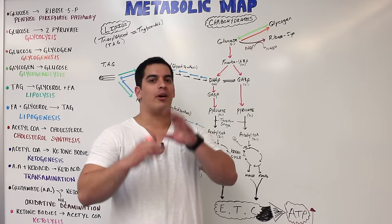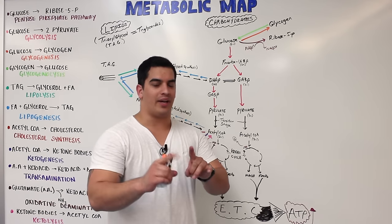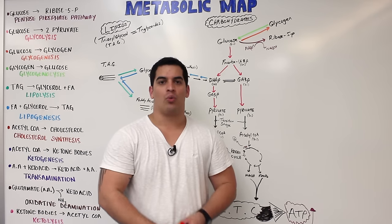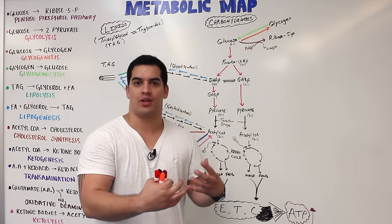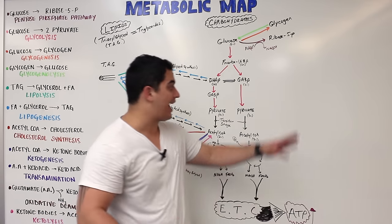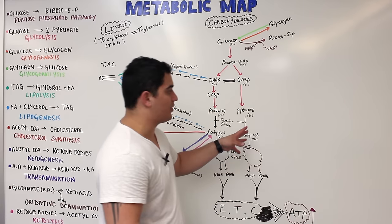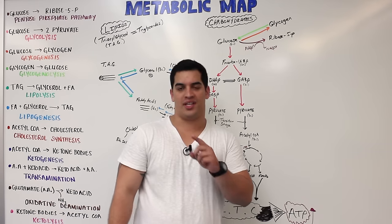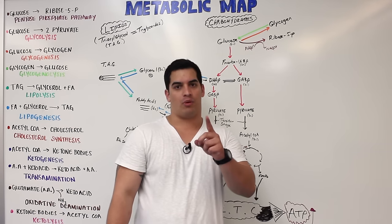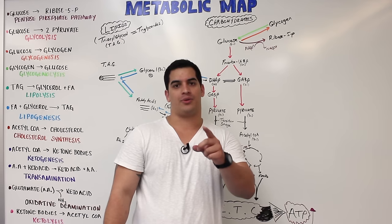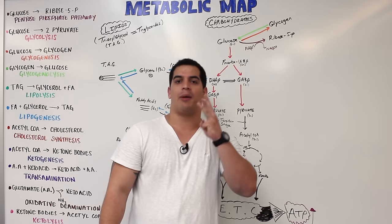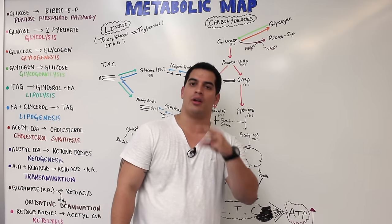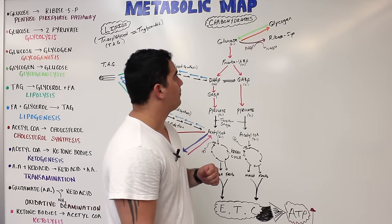Hi Ninja Nerds, so we're going to be in metabolic map part 3. We're going to talk about how amino acids are being metabolized and how that feeds into this overall intertwining of these pathways. If you haven't already seen it, watch part 1 which is on the carbohydrates, part 2 which is on the lipids, and now part 3 is going to be specifically focusing on proteins or amino acids.